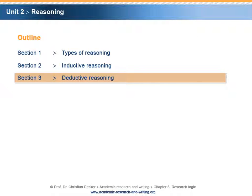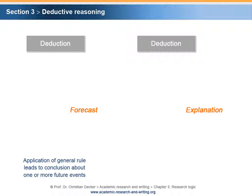Section 3: Deductive reasoning. Deductive reasoning can be used in order to generate forecasts or explanations. In a forecast, the application of a general rule leads to a statement about one or more future events.